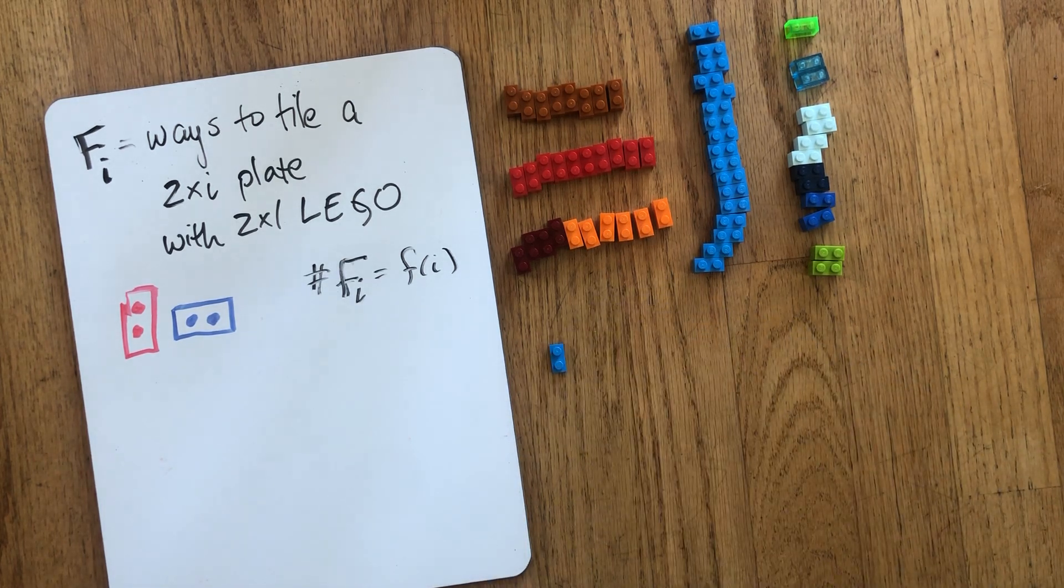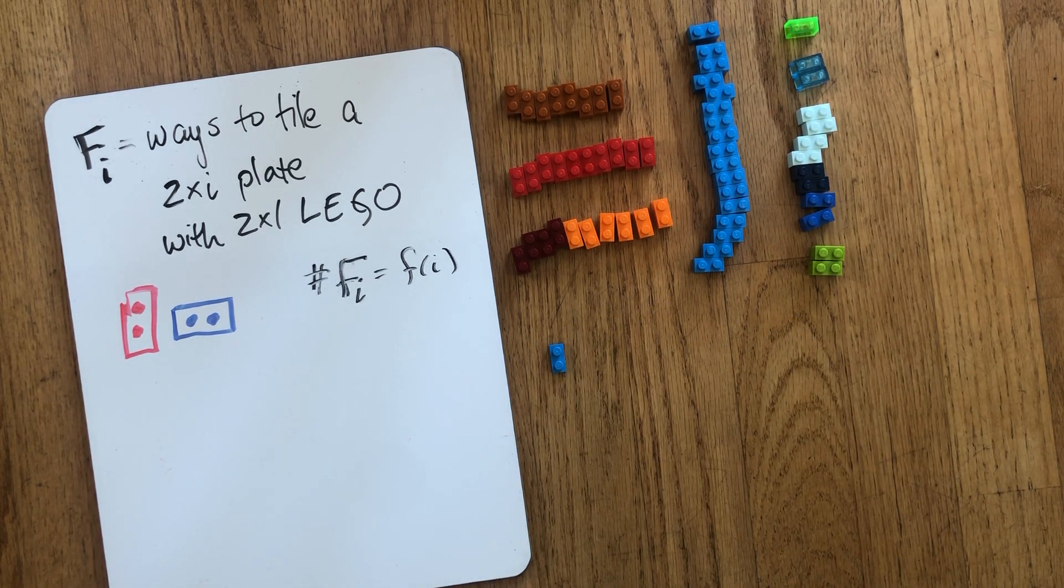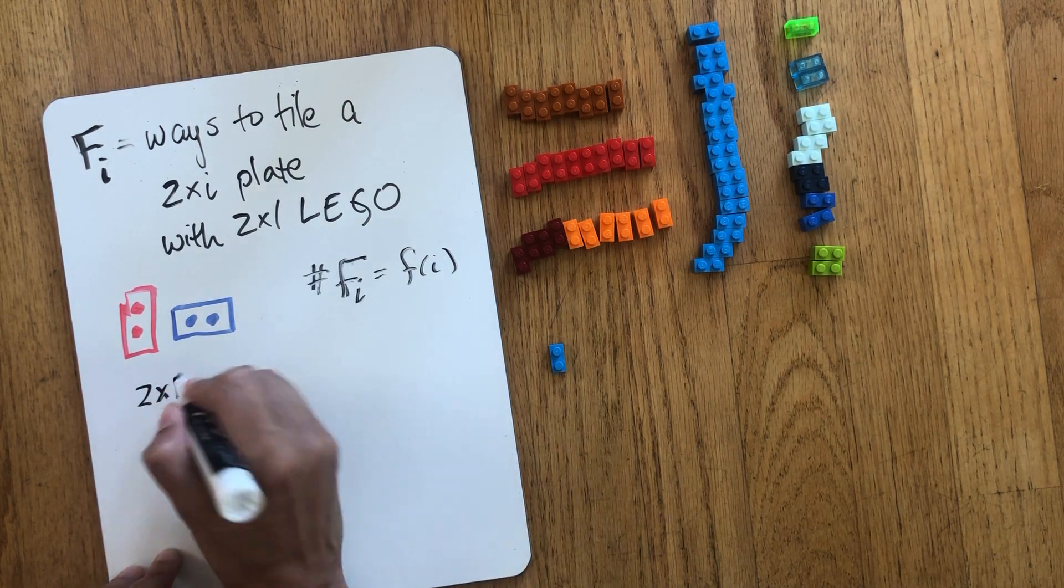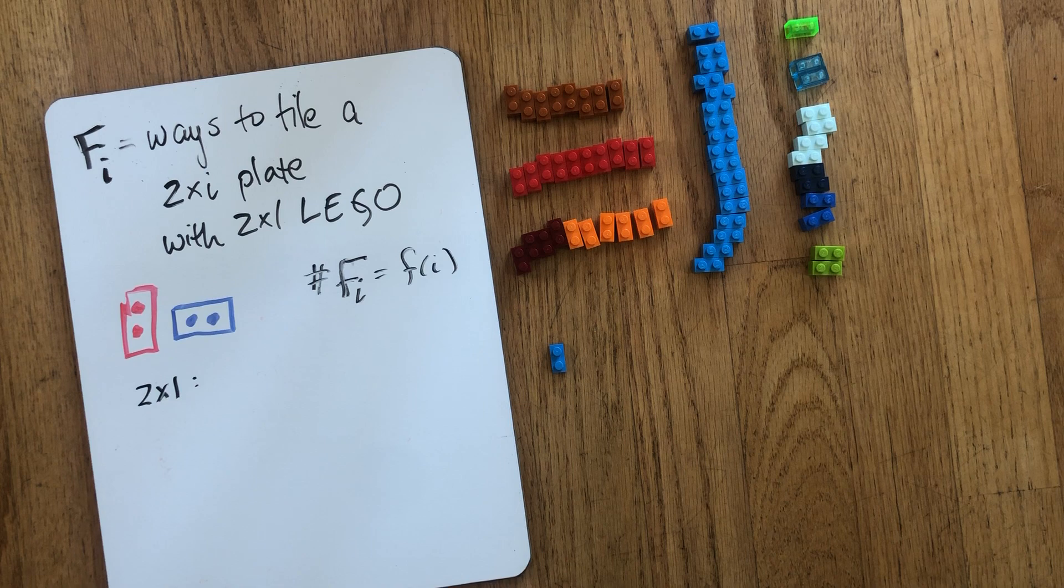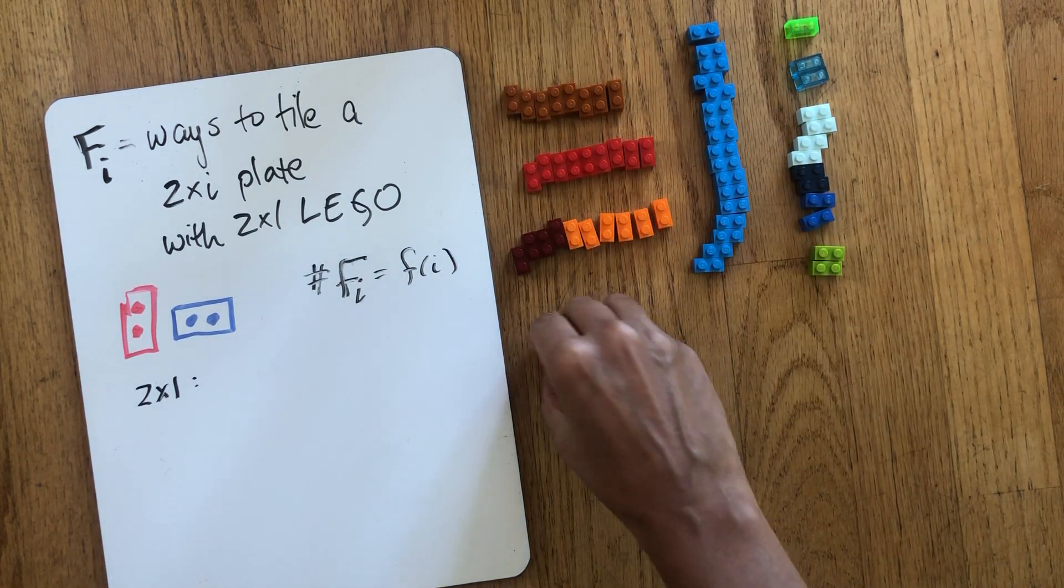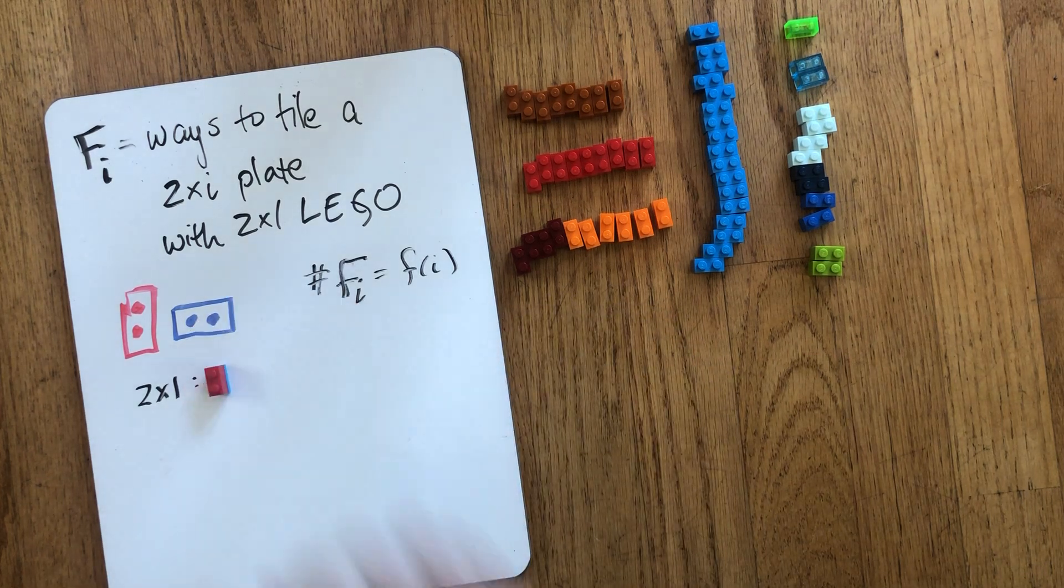So the first thing we're going to do is start with a 2×1 plate. So maybe we'll record our data. So if we have a 2×1 plate, how many ways can we do this? Well, we have to take a vertically oriented brick and stack it. There's no other way to do it, so we get one answer.